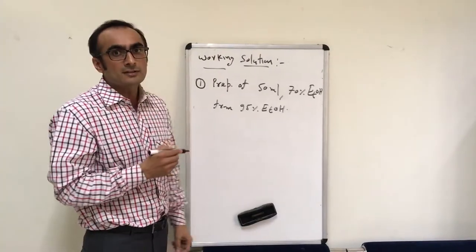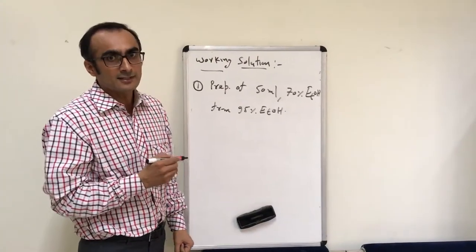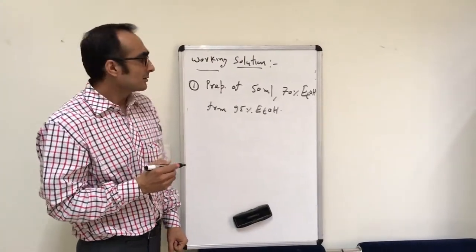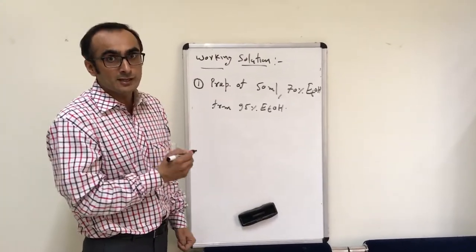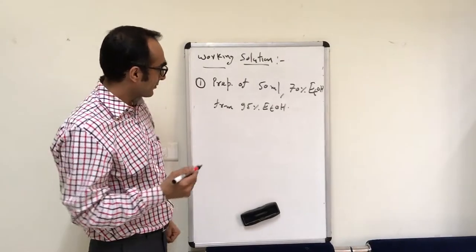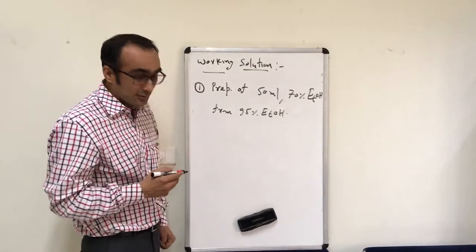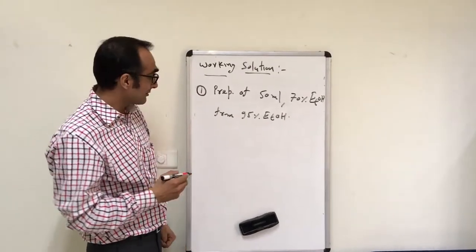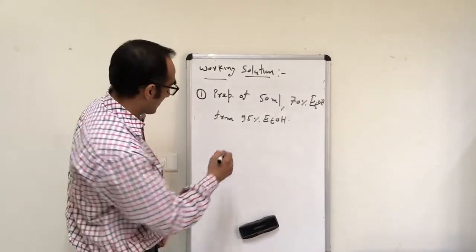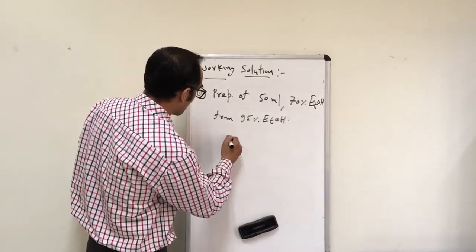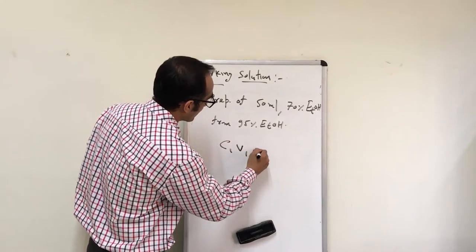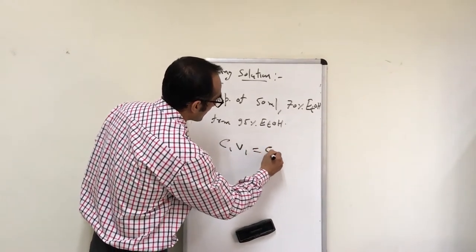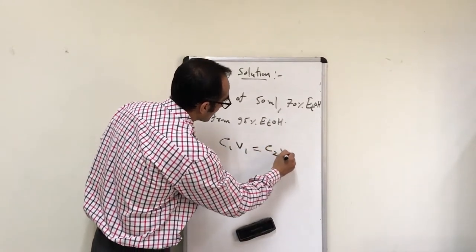The stock solution is a highly concentrated solution. To make it a working solution, one needs to dilute it. For dilution, you use the dilution equation, which is C1V1 = C2V2.